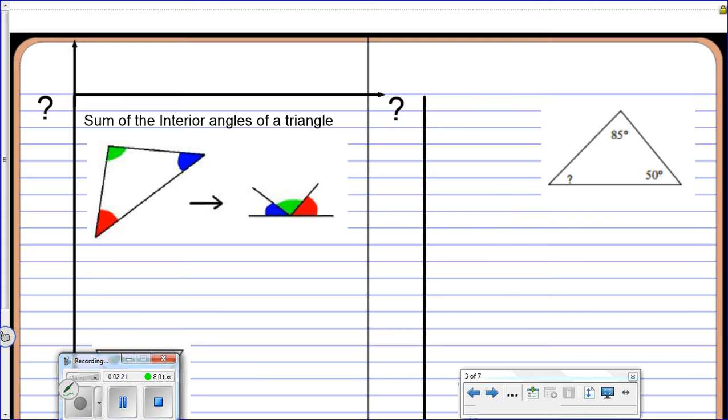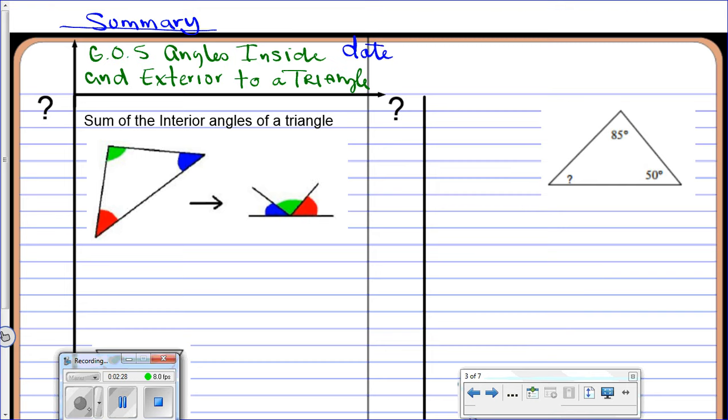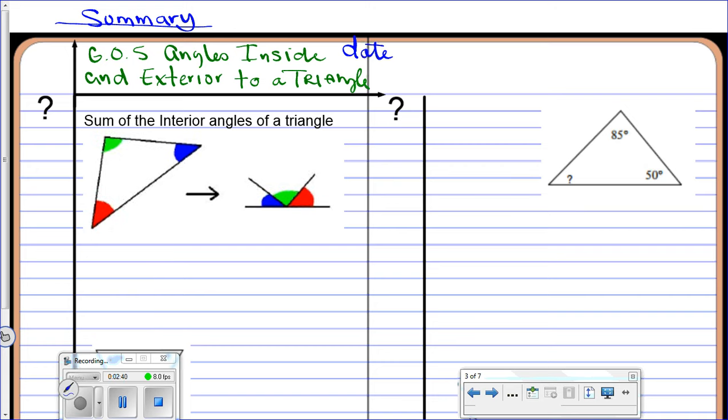But first, we're going to set up our document for this section. Hopefully you've written your summary from the previous video. You'll draw a line, and then now let's go ahead and write our title in. And so this is going to be the first part of it, the sum of the interior angles of a triangle.